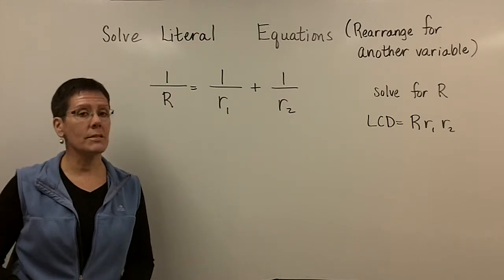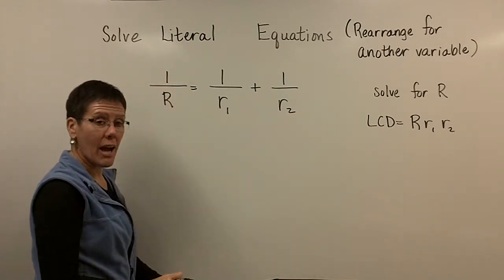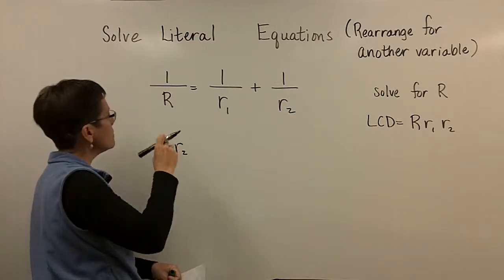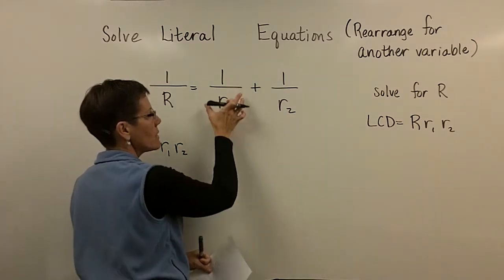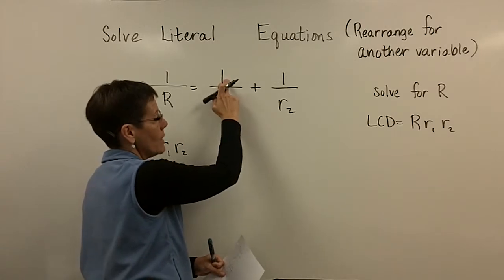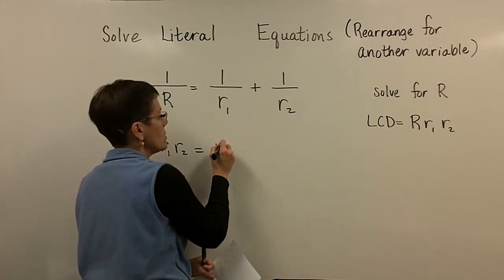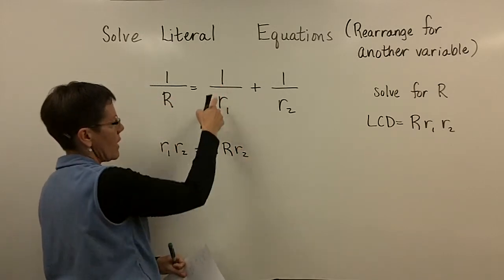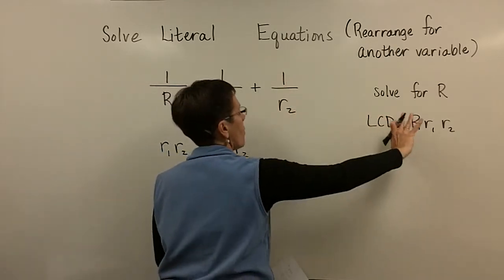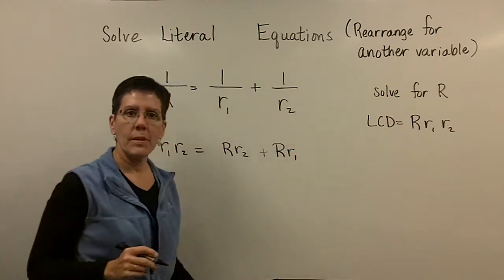I need to multiply both sides of this equation by all three of those letters — capital R, R sub 1, and R sub 2. When you multiply the first fraction by all three, the big R's cancel out, and the 1 gets multiplied by R sub 1 and R sub 2. For the second fraction, the R sub 1's cancel out and that 1 gets multiplied by the big R and R sub 2. For the third fraction, the R sub 2's cancel out and that 1 gets multiplied by the big R and R sub 1. And we've cleared our denominators.